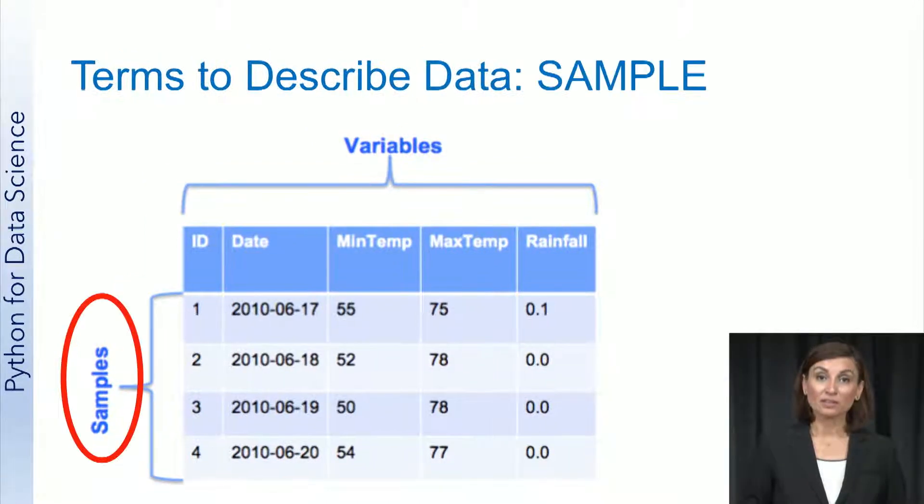A sample is an instance or example of an entity in your data. This is typically a row in your data set. This figure shows part of a data set of values related to weather. Each row is a sample representing weather data for a particular day. The table in the figure shows four samples of weather data, each for a different day.